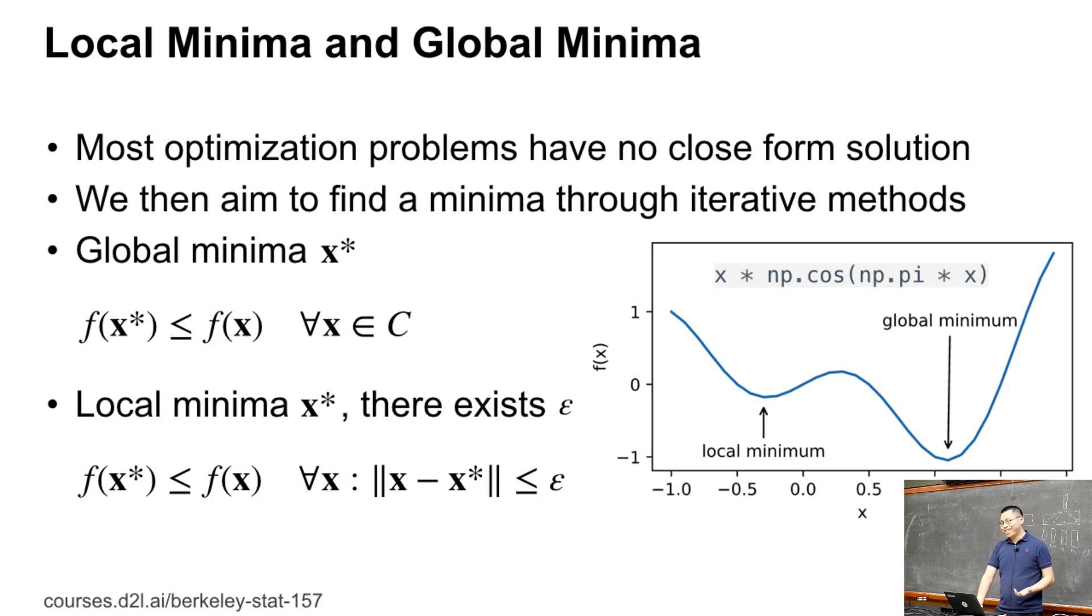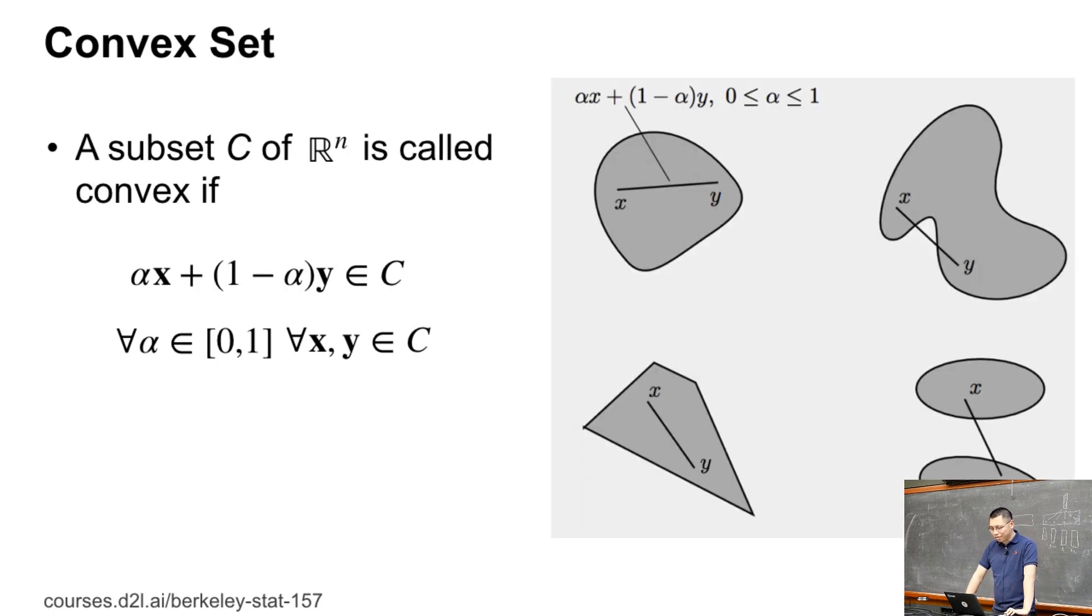In most cases, we can only guarantee that the iterative method finds a local minima, because you have no global picture of the loss function. But we can make the problem simple by making it convex. A subset C is convex if we can pick any x and y and draw a line between x and y, then this line should be within the set. For example, the left two are convex, the right two are not, because the segment of the line is not in C.